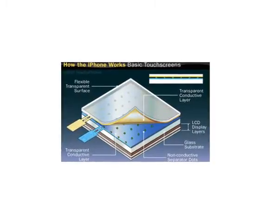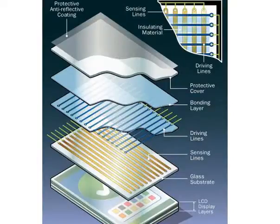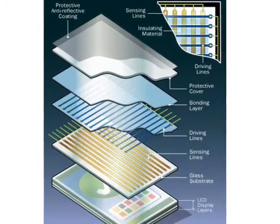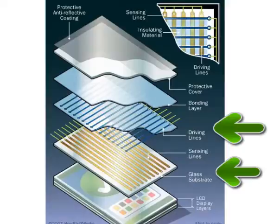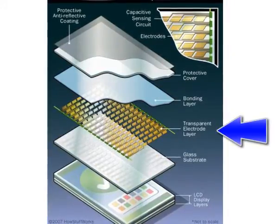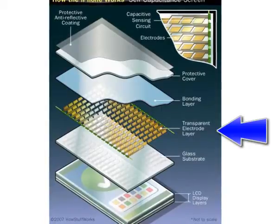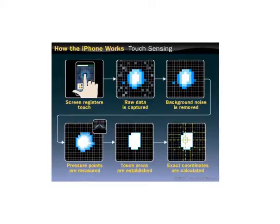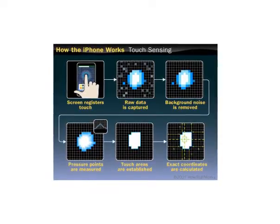The iPhone screen detects touch by two methods: mutual capacitance or self-capacitance. Mutual capacitance requires two distinct layers of material. Self-capacitance uses one layer of individual electrodes connected with a capacitance sensing circuit to allow people to use touch commands that require multiple fingers.